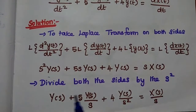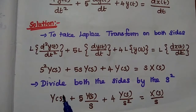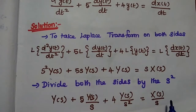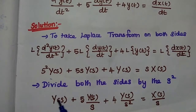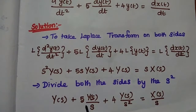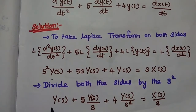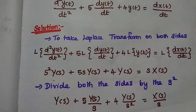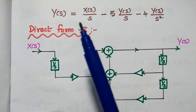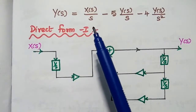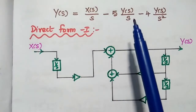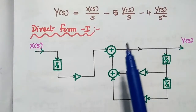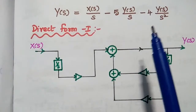In the next step, we keep Y of S and shift all other terms to the right hand side, because Y of S is the actual output of the system. So, Y of S is equal to X of S by S minus 5Y of S by S minus 4Y of S by S squared. This is a simple result and also serves as the equation for drawing the direct form 1 realization.